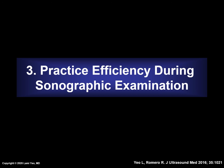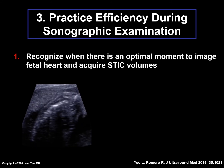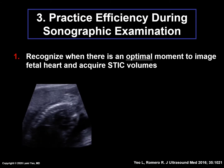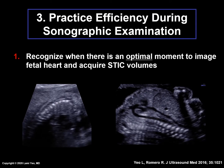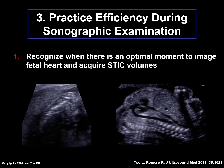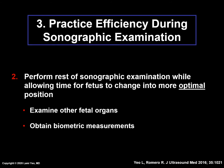Success in STIC volume acquisition can also be achieved by constantly adapting to the fetal situation and practicing efficiency. One should always recognize when there is an optimal moment to image the fetal heart and acquire STIC volumes. For example, if the fetal spine is anterior it may be difficult to visualize the fetal heart due to shadowing, but if the fetus changes to a supine position, this may be an optimal time to start acquiring STIC volumes. Another strategy is that when fetuses are not in an optimal position, one should perform the rest of the sonographic examination — such as examining other fetal organs or obtaining biometric measurements — thus allowing time for the fetus to change into a more optimal position.